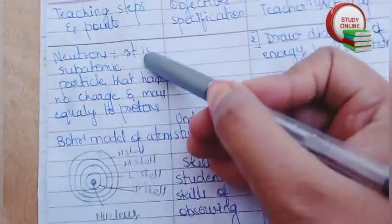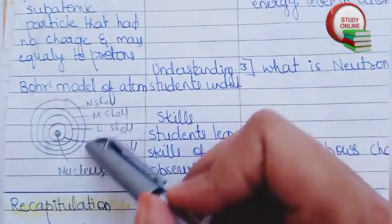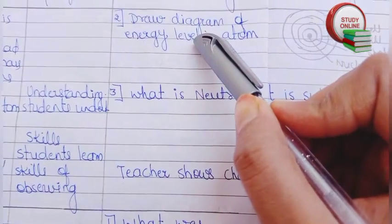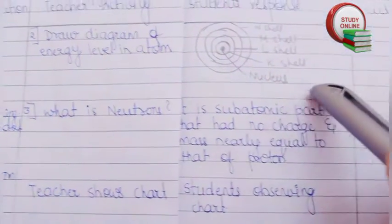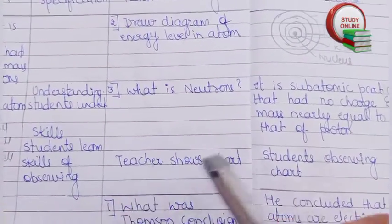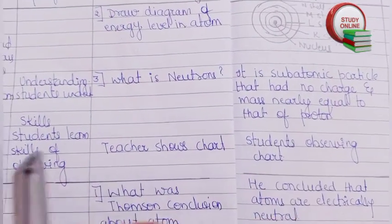Here you can see neutrons and Bohr's model of an atom, and here questions that we have to ask students. Here is the expected answer and this is blackboard work. Teacher shows chart, students observe chart. These are the skills.